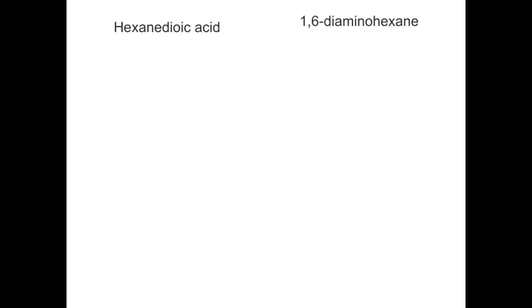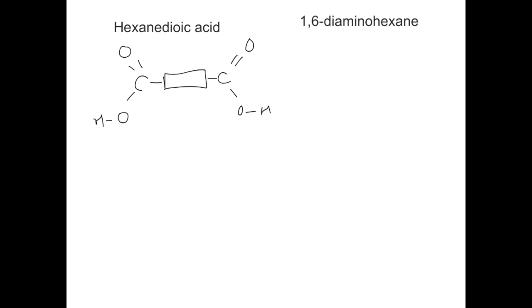Now I'm going to draw the simplified version of each, and all that means is drawing a rectangular box to represent that central chunk of carbon-hydrogen repeats. So for hexane dioic acid, we need the C double-bond O ending here because that's the important part — the diac bit — but then I'm just going to draw a box to represent the hexane bit and double it up at the other end. And for 1,6-diaminohexane, remember that's an NH2 on the first and last carbon, so draw another rectangle to show the central chunk and join it to the last NH2 group.